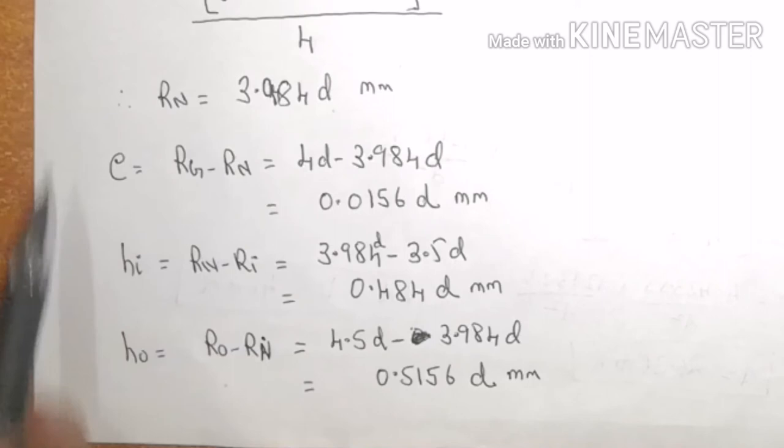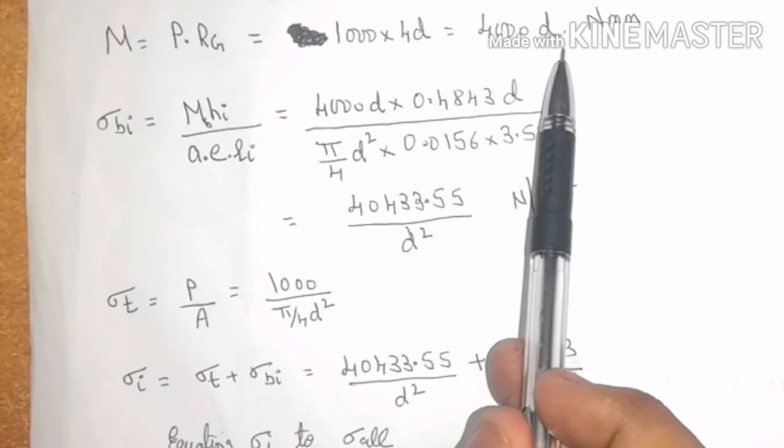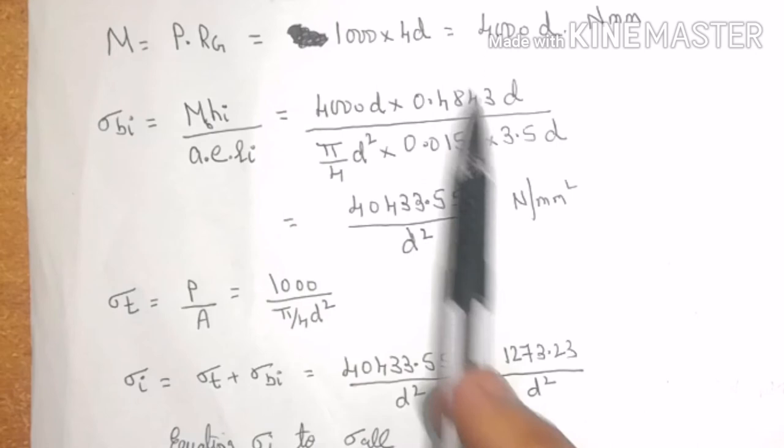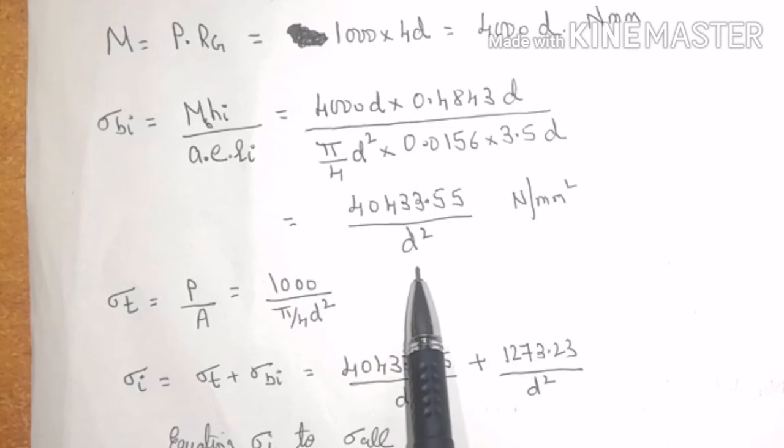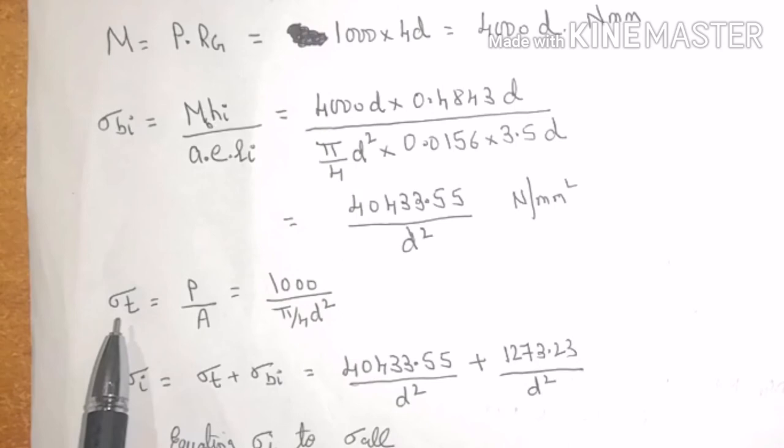After finding out all these values, next step is to find out moment, that is P multiplied by Rg. Load was given to us as 1000 multiplied by 4000D Newton mm. Then again sigma Bi, that is M b hi divided by A e ri, again from PSG this formula comes. Substituting the values I will get 40433.55 divided by D square. This stress is acting at the internal surface or internal fiber.